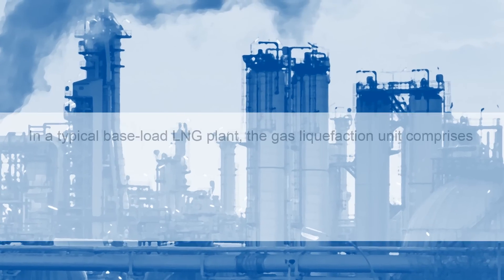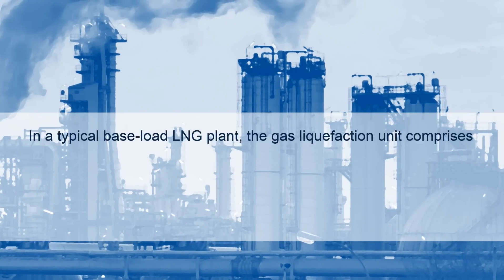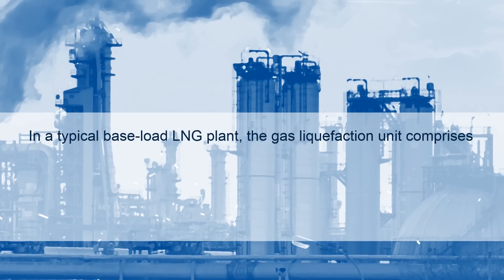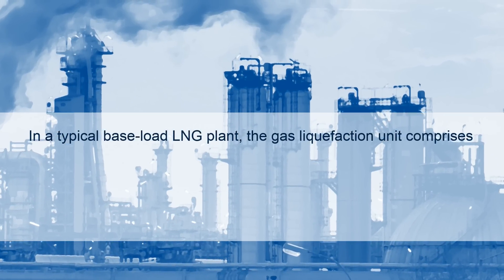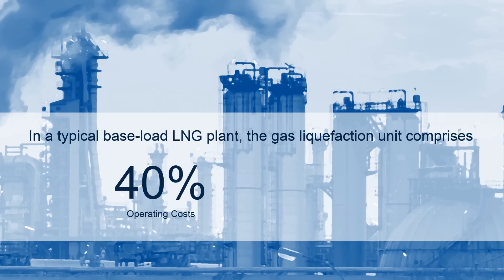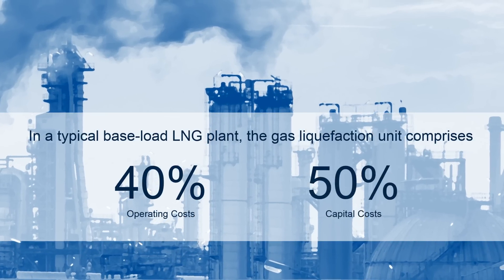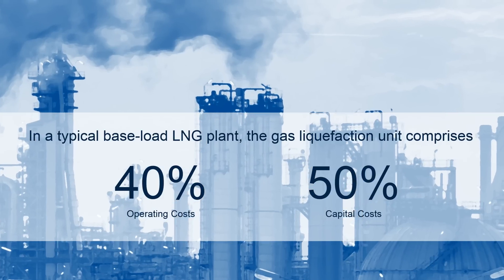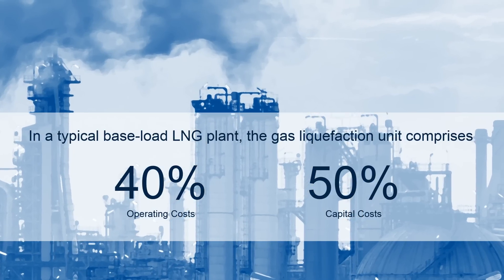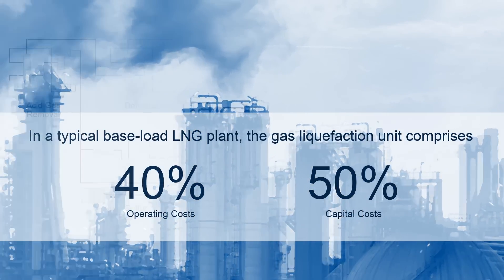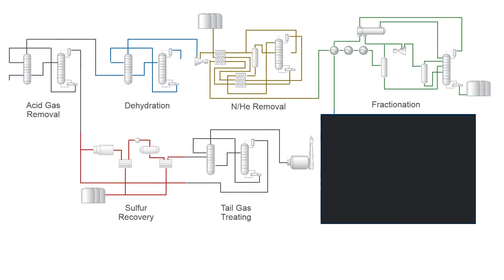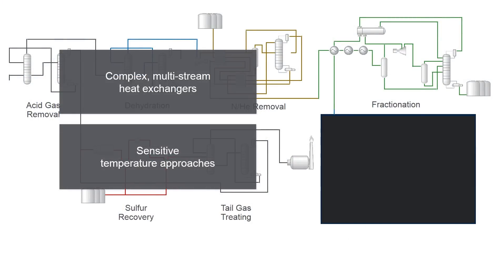In a baseload LNG plant, the gas liquefaction unit can comprise nearly 40% of the operating costs and 50% of the total capital costs. Cryogenic multi-stream heat exchangers, including coil-wound exchangers, greatly affect the performance and the cost of the full process. Because of the complexity of their geometry and the number of streams flowing through them, these exchangers are often very difficult to model.